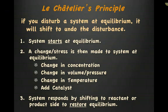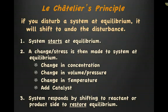Let's take a look at how this applies to a system at equilibrium. Number one, the system starts at equilibrium. The rates of the forward and reverse reaction are equal. That means all factors are now constant, such as temperature, pressure, volume, and concentration.